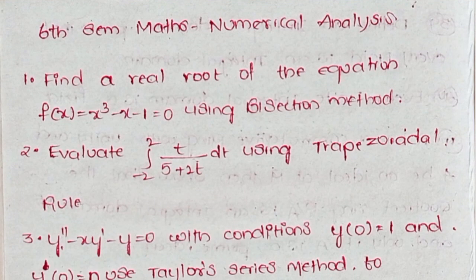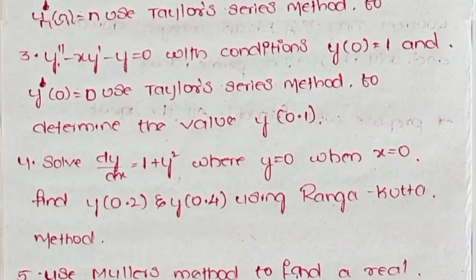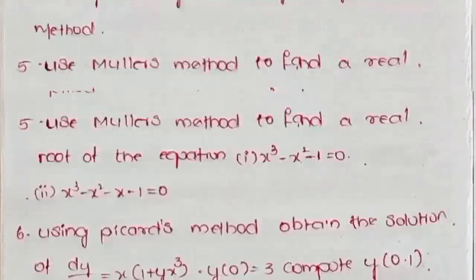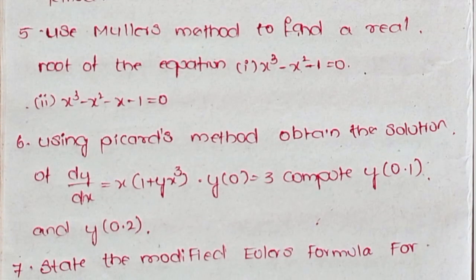Question 1: Find a real root of the equation f(x) = x³ - x - 1 = 0 using bisection method. Question 2: Evaluate integration -2 to 2 of t/(5+2t) dt using trapezoidal rule. Question 3: y'' - xy' - y = 0 with conditions y(0) = 1 and y'(0) = 0. Question 4: Use Taylor's series method to determine the value of y(0.1). Question 5: Use Muller's method to find a real root of the equation.